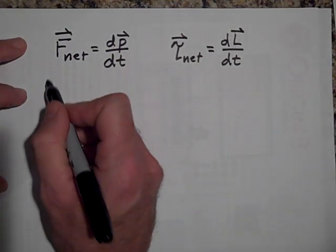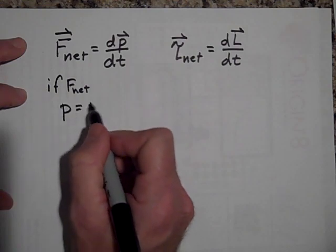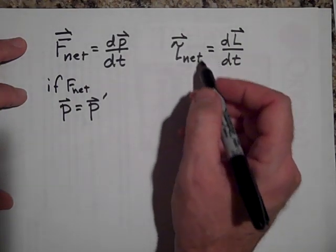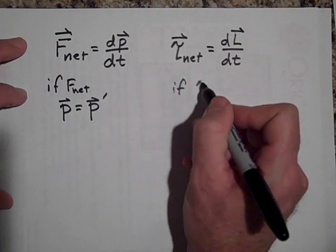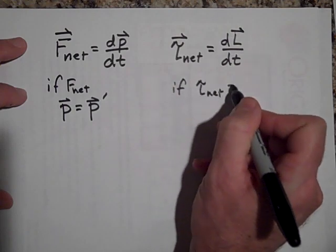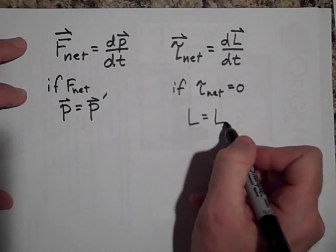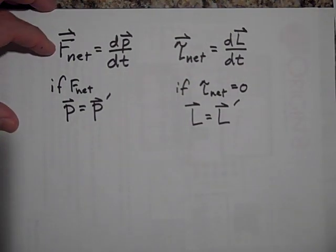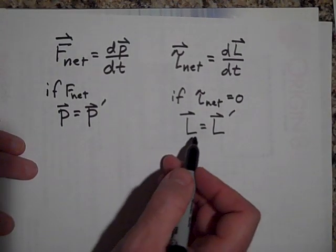Hey, if there's no net torque, if f net equals zero, then we said p equals p prime. Well, that's true with angular momentum too. If the net torque is equal to zero, then L will equal L prime for a system. That's if net torque is equal to zero.